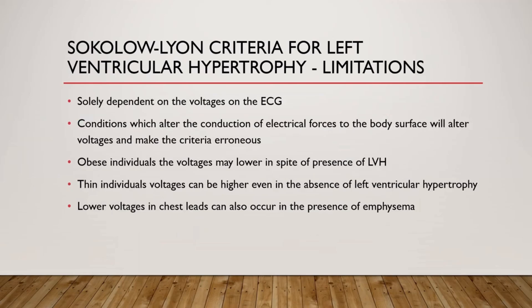There are certain limitations for the Sokolov-Lyand criteria for left ventricular hypertrophy. They are solely dependent on the voltages on the ECG. Conditions which alter the conduction of electrical forces to the body surface will alter voltages and make the criteria erroneous. Obese individuals have lower voltages despite the presence of left ventricular hypertrophy, while in thin individuals voltage can be higher even in the absence of left ventricular hypertrophy. Lower voltages in chest leads can also occur in the presence of pulmonary emphysema. These are the important limitations, though the criteria is still easy to check and remains one of the most commonly used.